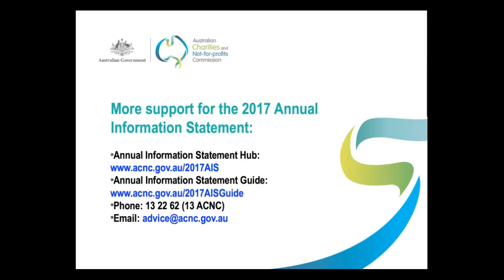And, as always, if you have any questions or need any specific assistance with the Annual Information Statement, call us on 13 2262 or email us at advice@acnc.gov.au. I hope this has been helpful and thanks for watching.